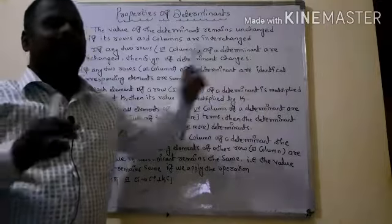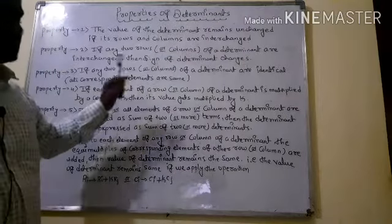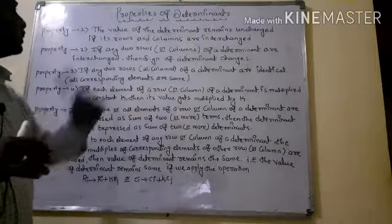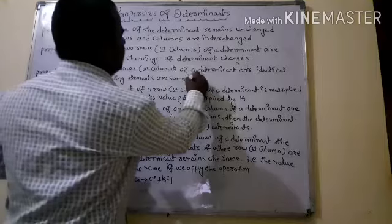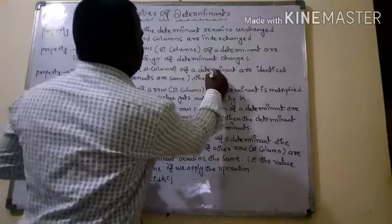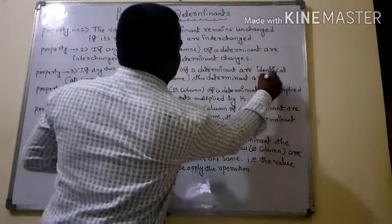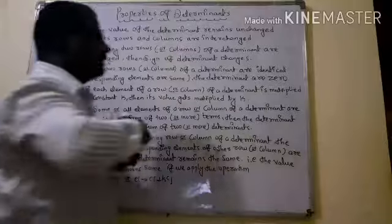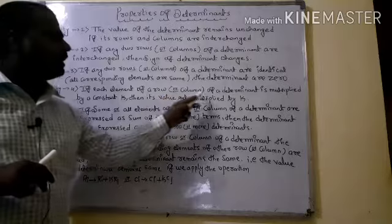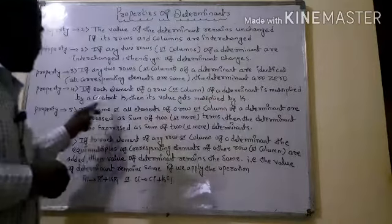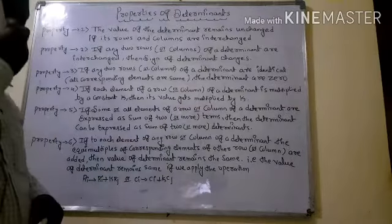The third property: if any two rows or columns of a determinant are identical — meaning the same — then all corresponding elements are the same and the result is zero. The determinant will be zero. That is the third property finished. Fourth: if each element of a row or column of a determinant is multiplied by a constant k, then its value gets multiplied by k.